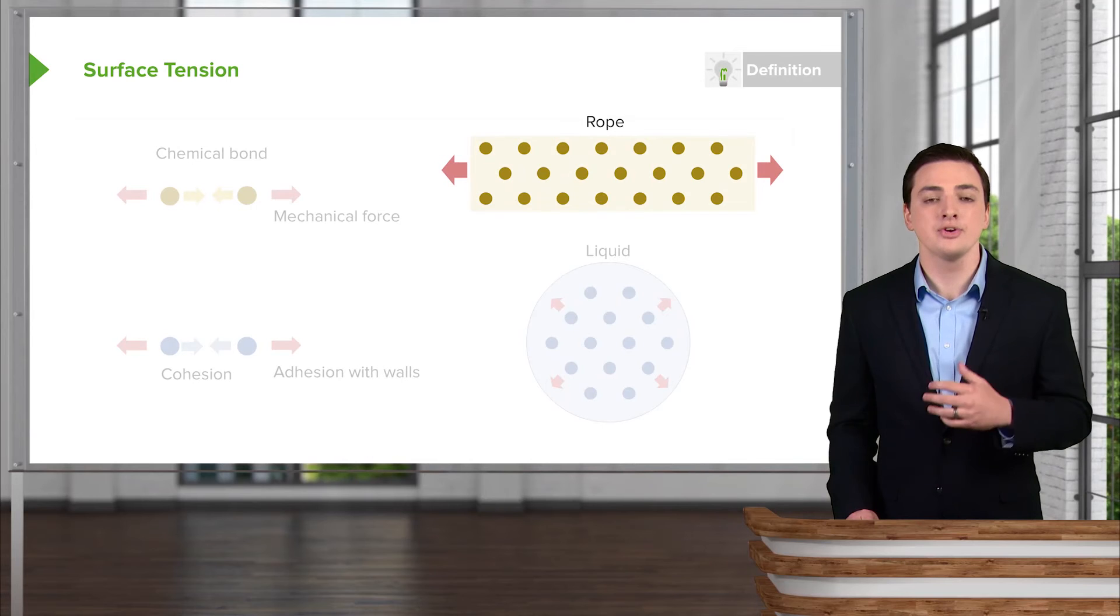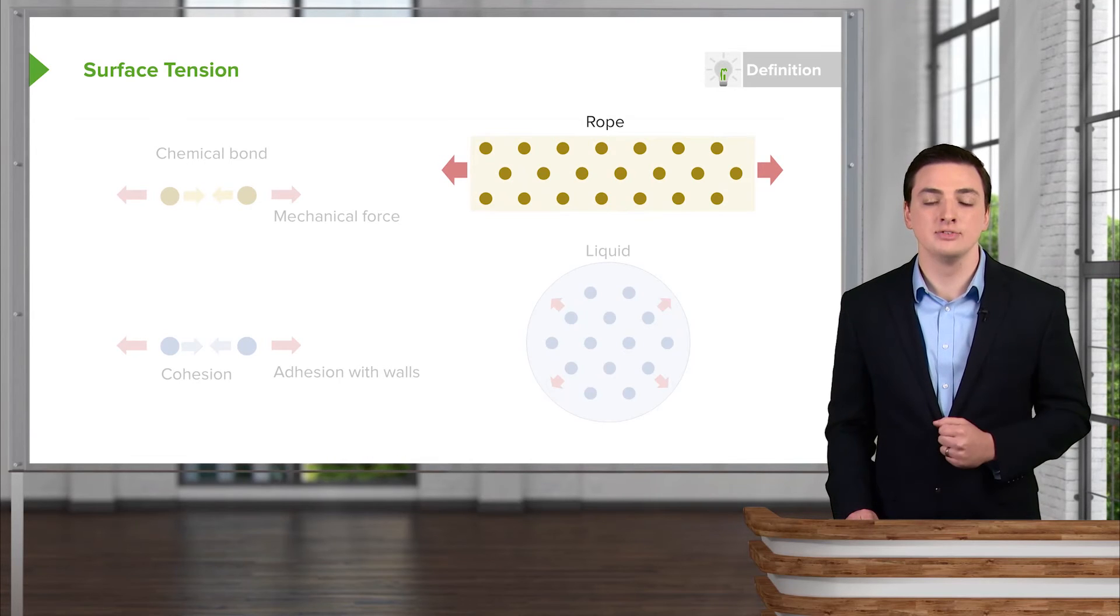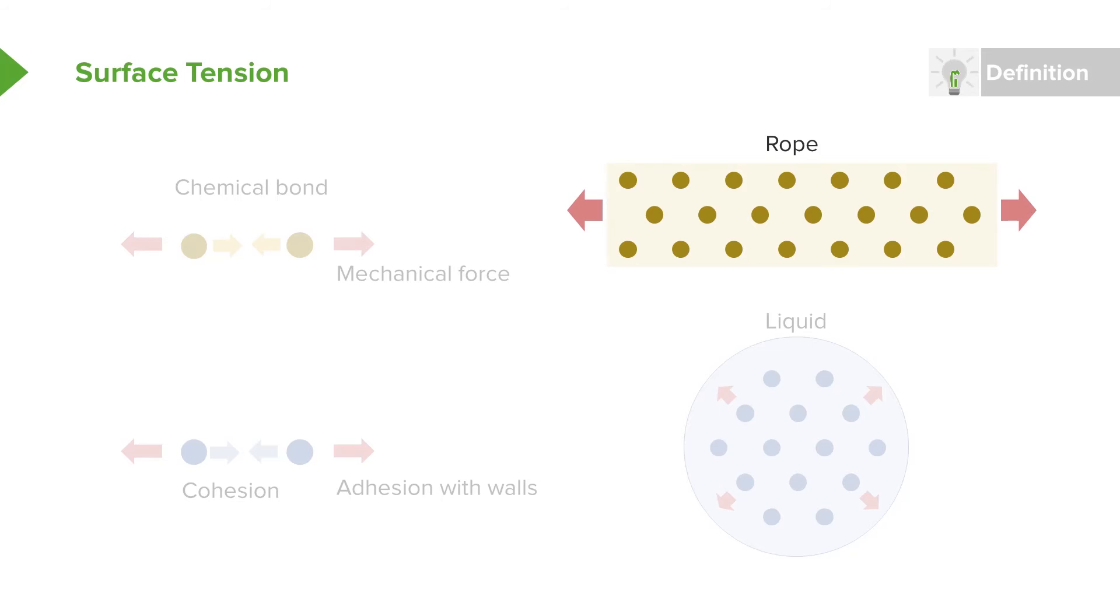Let's start with another example of a property of fluids, which is the surface tension. A good analogy for surface tension would be something like a rope, like you see here. If I'm pulling on both sides of the rope, what's going to happen is the rope will try to fight that pulling. It has chemical bonds trying to keep it back together, even though I apply a mechanical force.